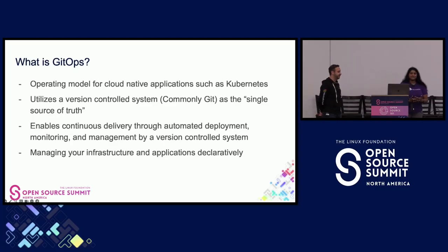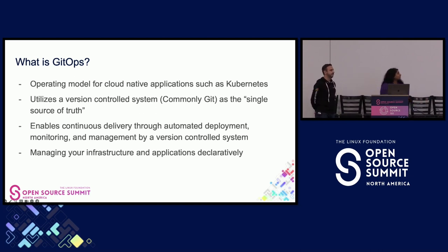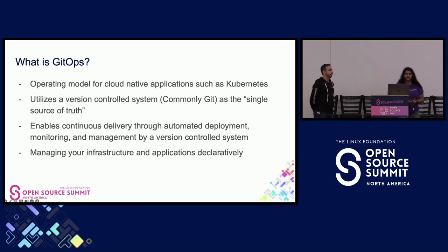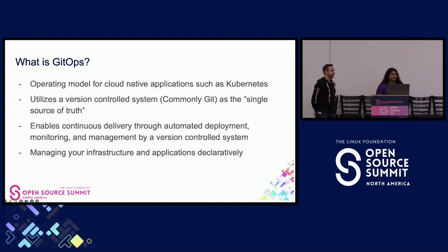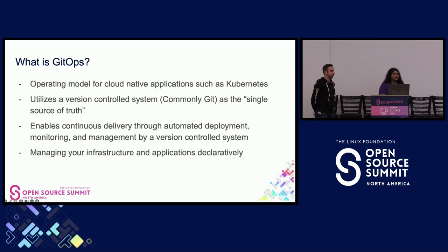If y'all are new to GitOps, I just wanted to run down what it is. It's an operating model for cloud-native applications such as Kubernetes, but it's not just for Kubernetes — if you are doing a multi-cloud infra, you can still use GitOps. Since we're focusing on Argo, Flux, and Flamingo in this talk, we'll focus on Kubernetes. It utilizes a version-controlled system, most commonly Git, as the single source of truth — it becomes your audit log. It also enables continuous delivery through automated deployment, monitoring, and management, and manages your infrastructure and applications declaratively.